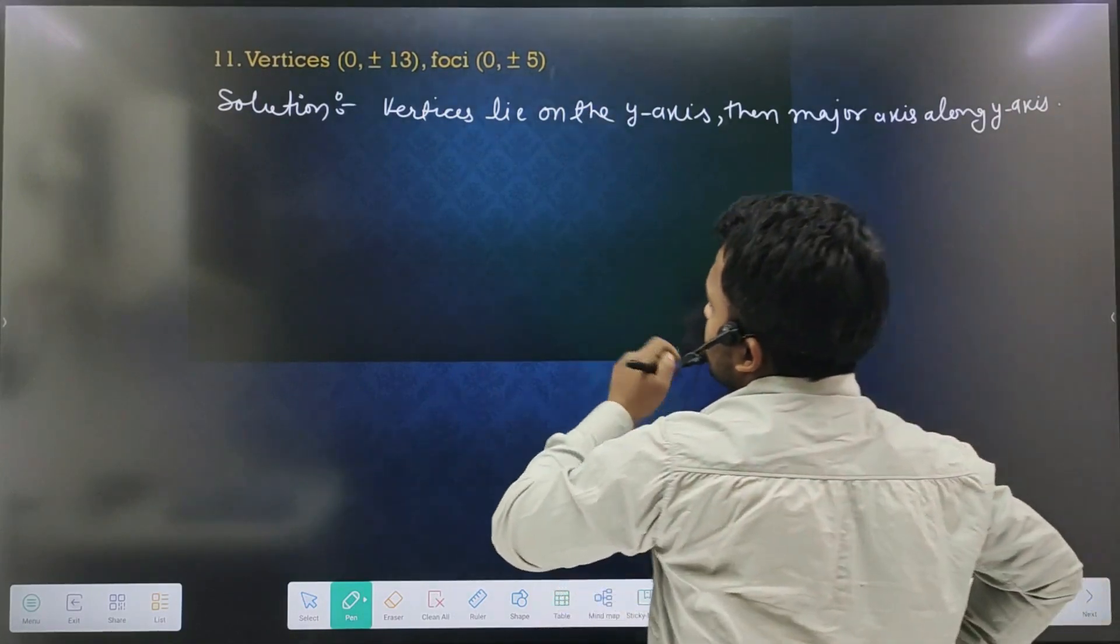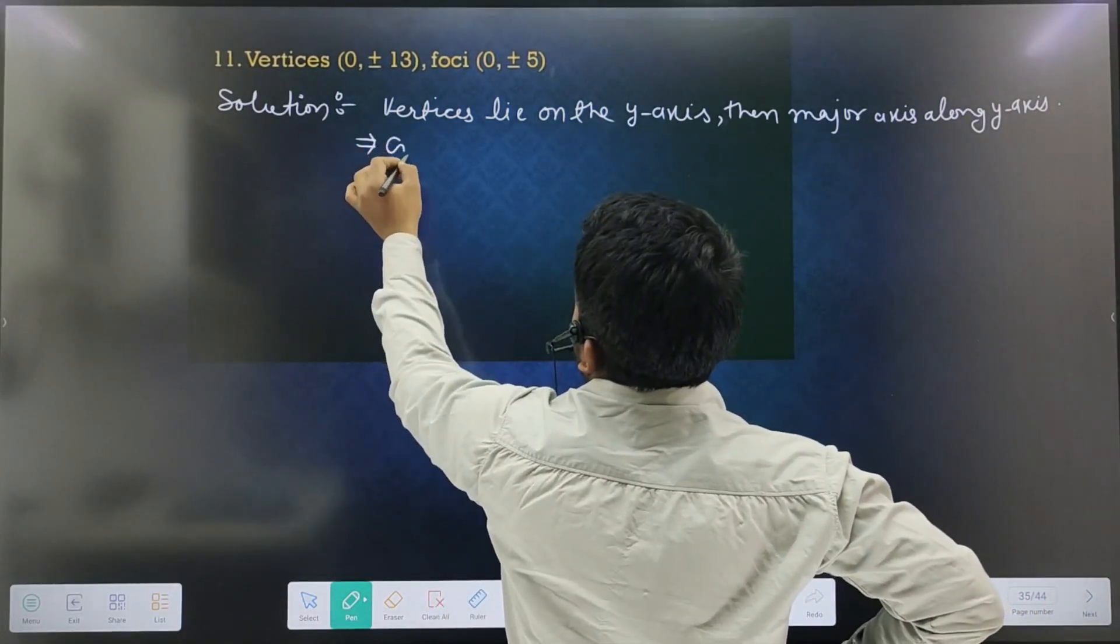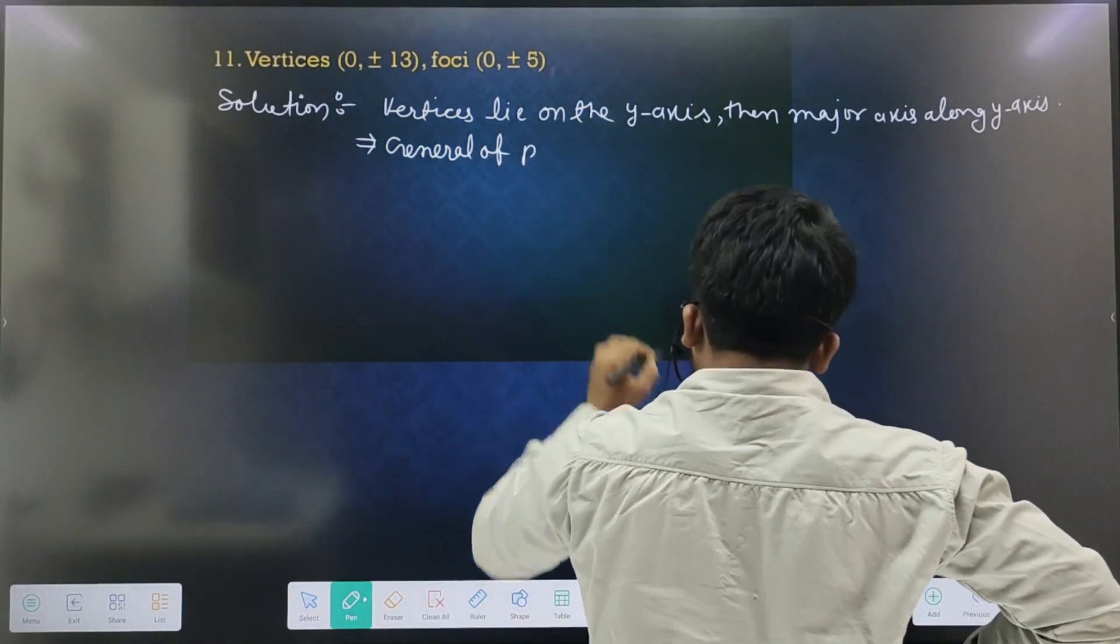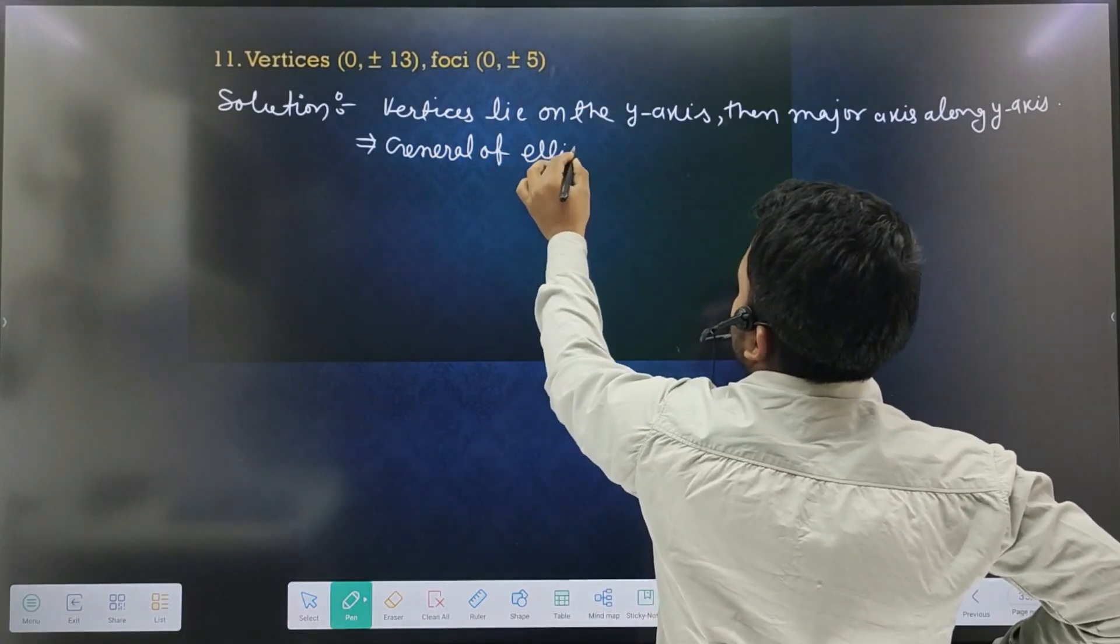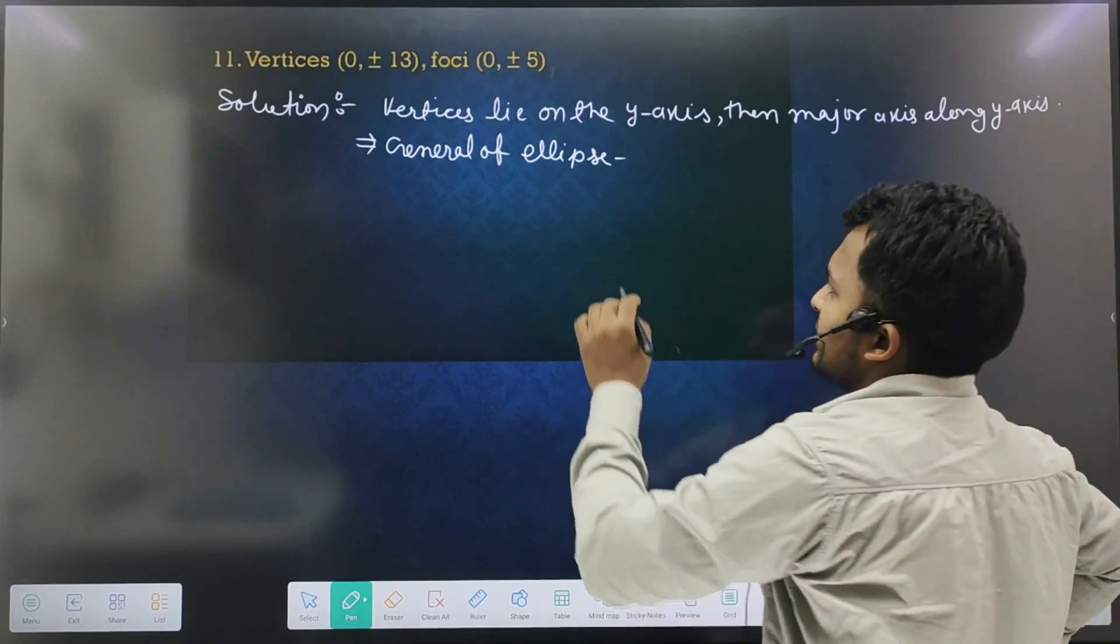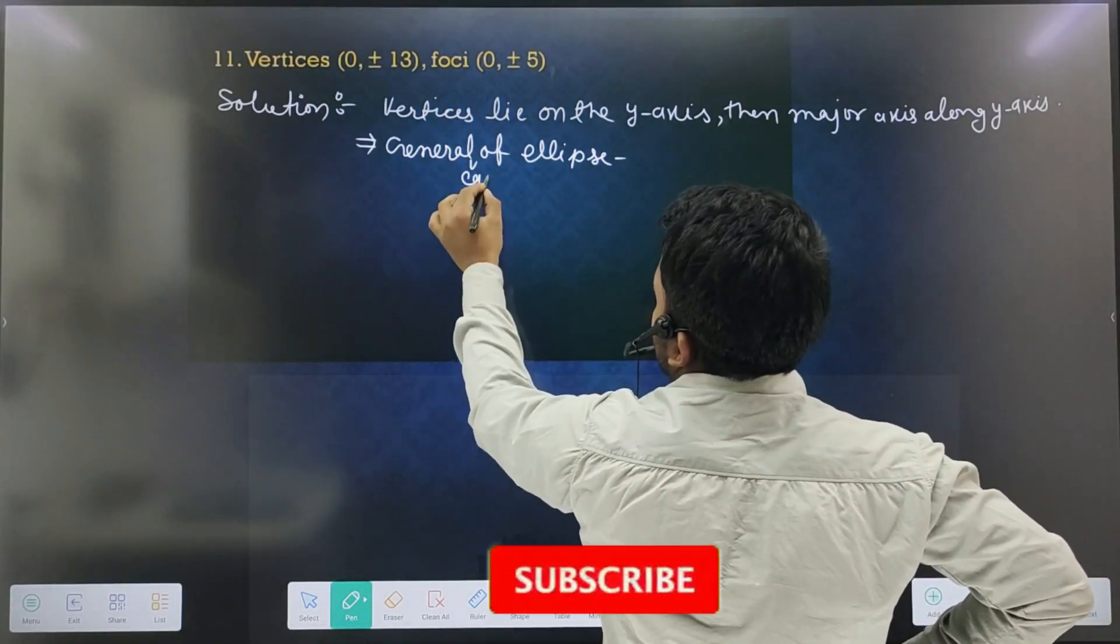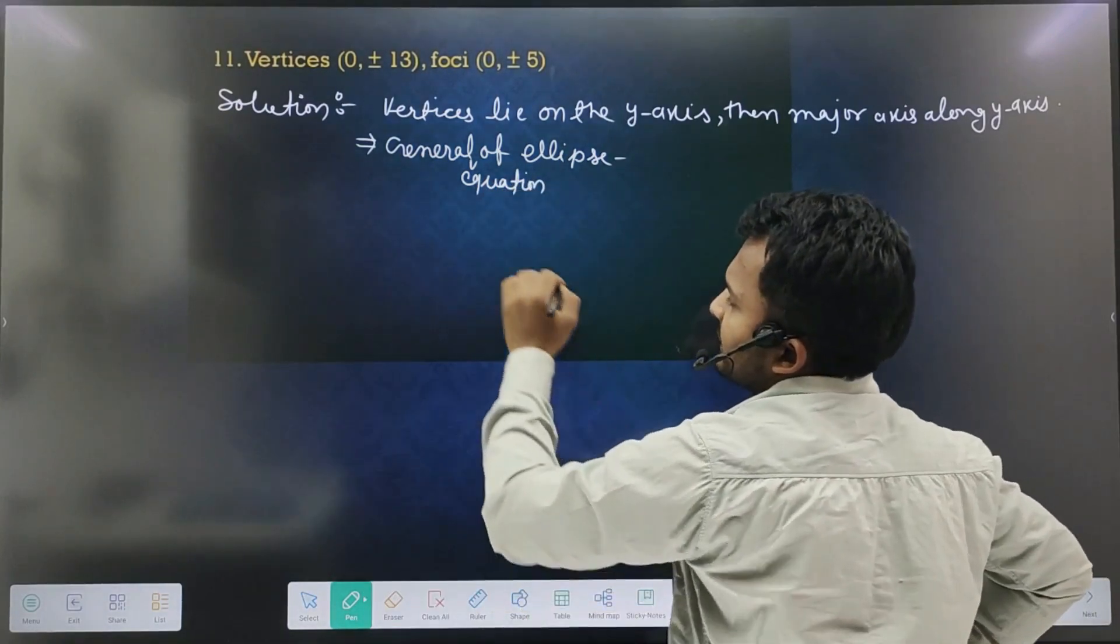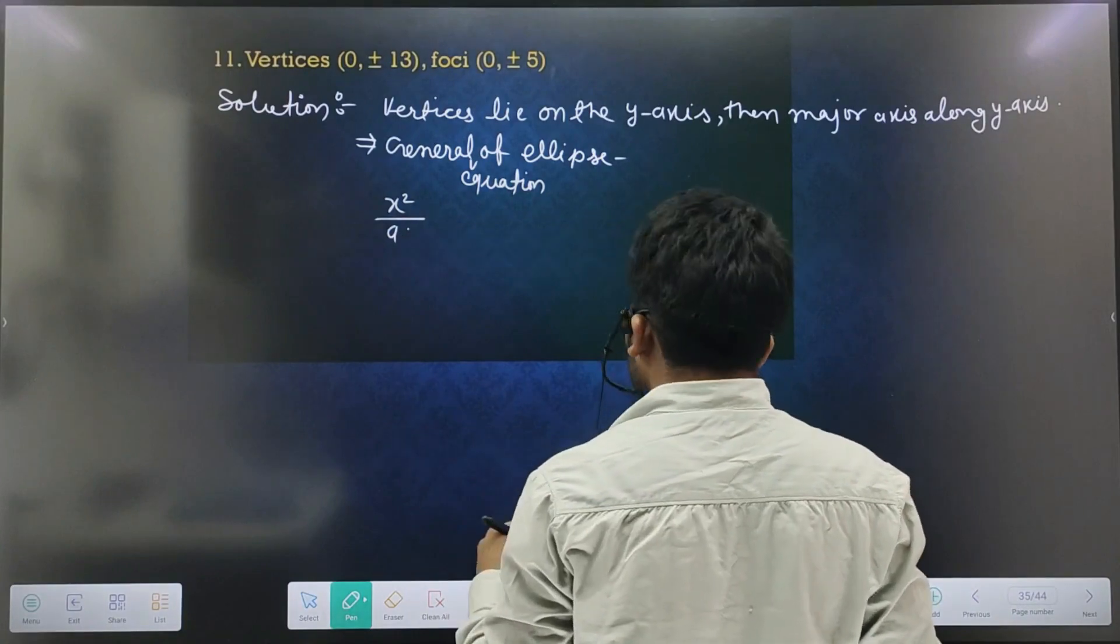General equation of ellipse. What will we do? x square upon... b will come here.